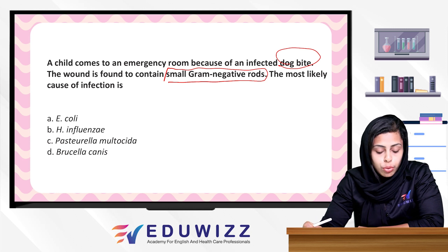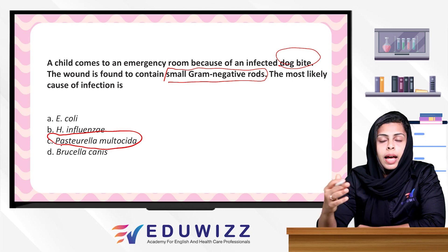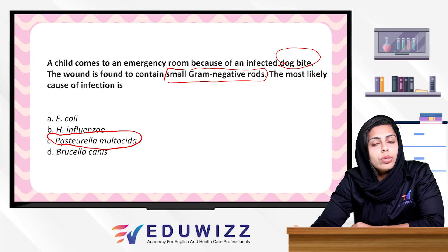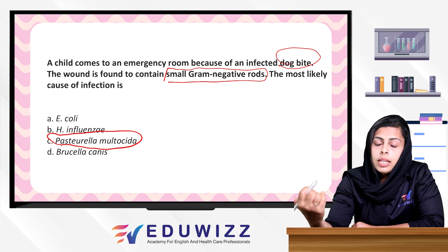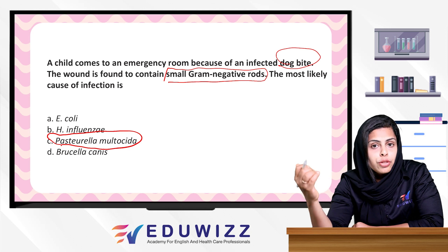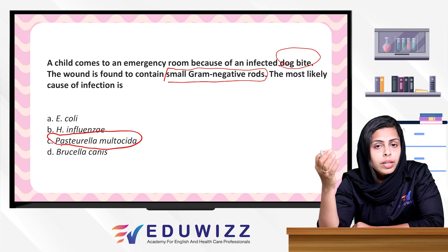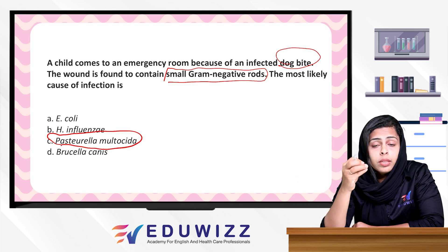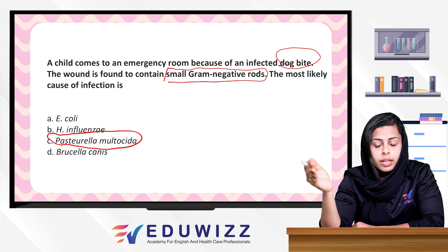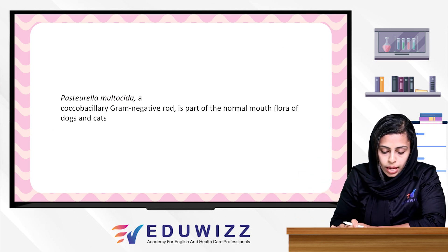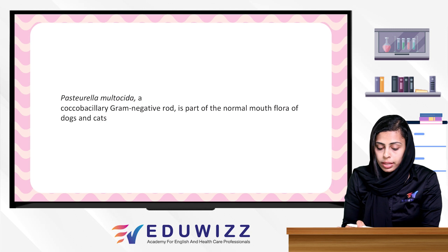In the case of dogs and cats, there are some organisms available as normal flora. It is called Pasteurella multocida. So the answer is C, Pasteurella. It is a coccobacillary gram-negative rod, a part of the normal mouth flora of dogs and cats.